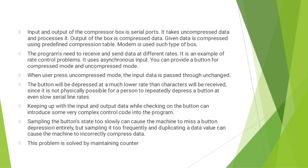Given data is compressed using a predefined compression table. A modem is used in such a type of box. The programs need to receive and send data at different rates — it is an example of a rate control problem. It uses asynchronous input. You can provide a button for compressed mode and uncompressed mode. When the user presses uncompressed mode, the input data is passed through unchanged. The button will be depressed at a much lower rate than characters will be received, since it is not physically possible for a person to repeatedly depress a button at even slow serial line rates. Keeping up with the input and output data while checking on the button can introduce some very complex control code in the program.